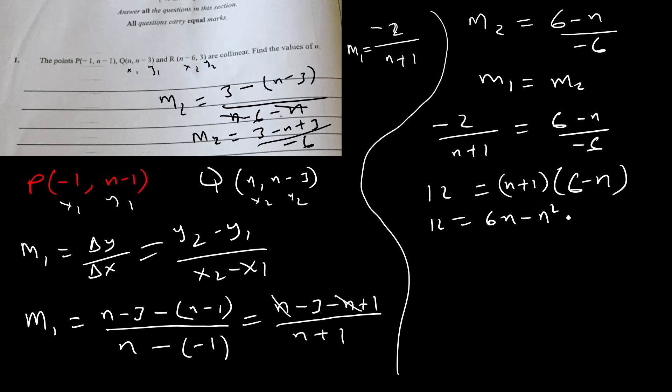Expanding: -n squared plus 6n - n + 6. Arranging, we have n squared minus 5n then plus 6 - 12, so n squared minus 5n plus 6 equals 0.